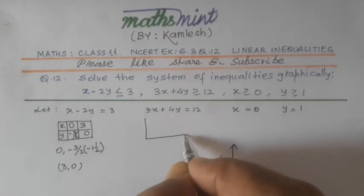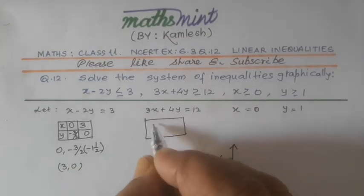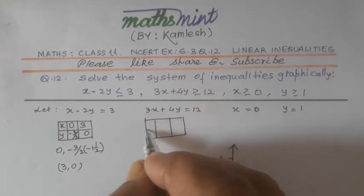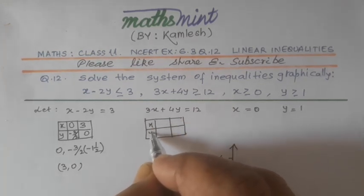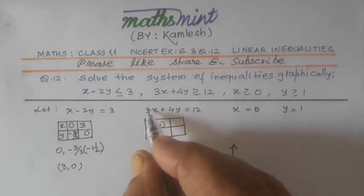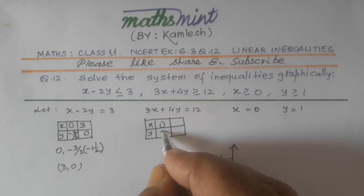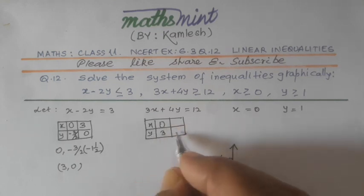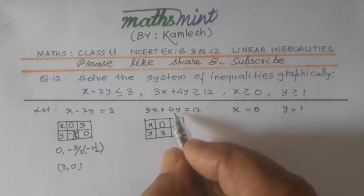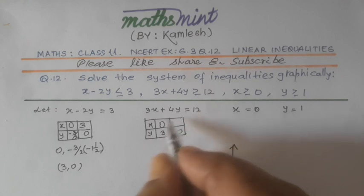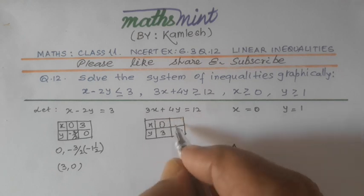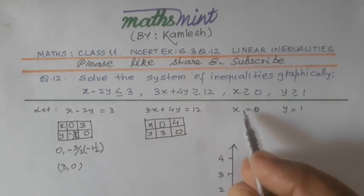Here again, we shall draw the same box with x and y. If x is equal to 0, 4y will be 12, so y will be 12 by 4 equal to 3. And if y is equal to 0, 3x is equal to 12, x is equal to 12 by 3 equal to 4.